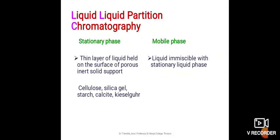The stationary phase often consists of a thin layer of polar liquid like water, alcohol, etc., held onto the surface of porous, inert, solid support—probably cellulose, silica gel, starch, calcite, kieselguhr, etc. The mobile phase is a non-polar liquid immiscible with the stationary phase.